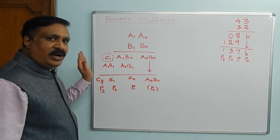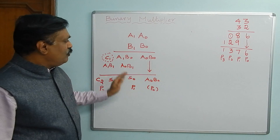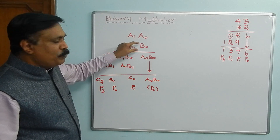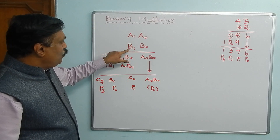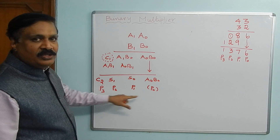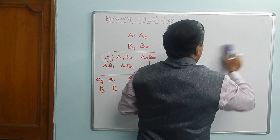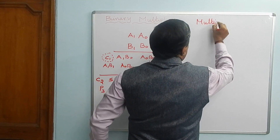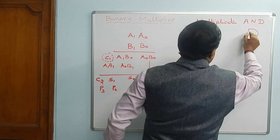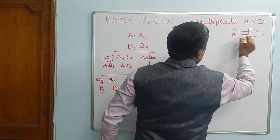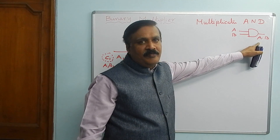Now I am going to transform this into a circuit. If you understand this, you can easily transform it into a circuit. We have multiplied two bits and we are adding two bits. For multiplication, already you know we have to use an AND gate. For multiplication, you are using an AND gate — A into B means you give A and B as inputs and this is the final product.